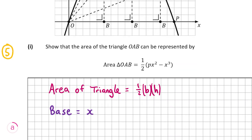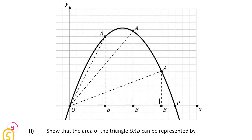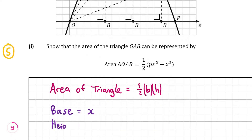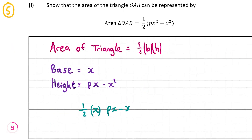Now we have our base, we have to find the height. A will always be on the parabola, so the perpendicular height will be px minus x squared, depending on whatever x is, as it is always on the parabola. So h is equal to px minus x squared. Popping these into the formula, we get half times x times (px minus x squared), which gives half times px squared minus x cubed. We've shown that the area of triangle OAB can be written as half times px squared minus x cubed.